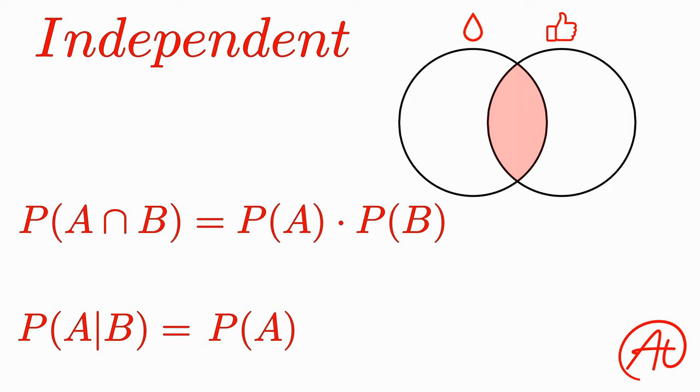And this works the opposite way too. The probability of B given A just becomes the probability of B.